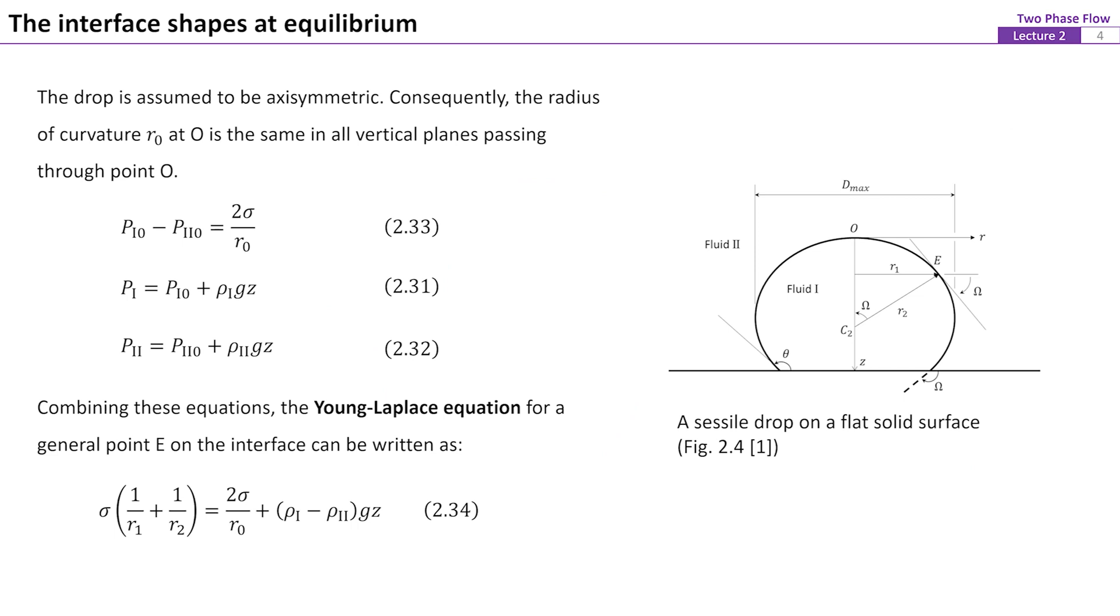Interfacial tension is very important in the determination of the shape of a liquid vapor interface at equilibrium. Consider an axisymmetric droplet on a flat solid surface.